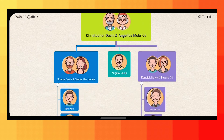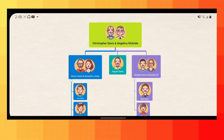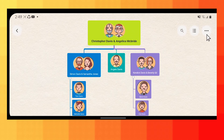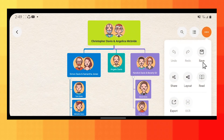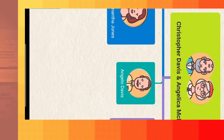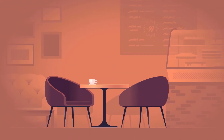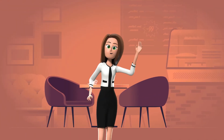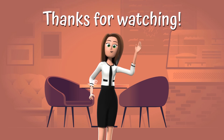To save your file, press the three-dotted icon and choose save. And that's how you can make a family tree on your phone using Get Mind. Thank you for watching.